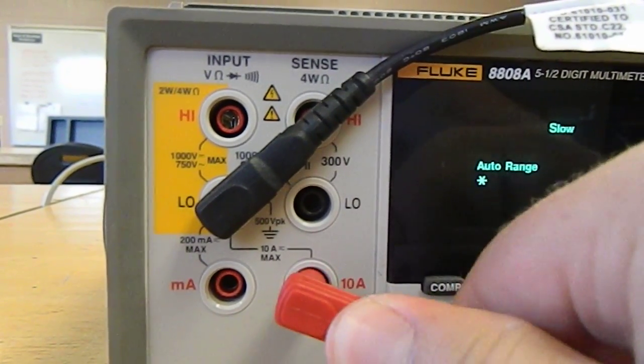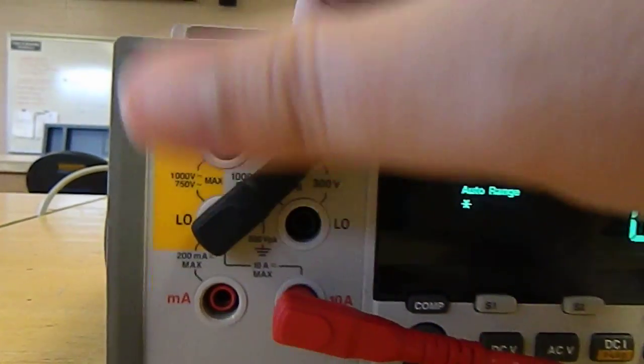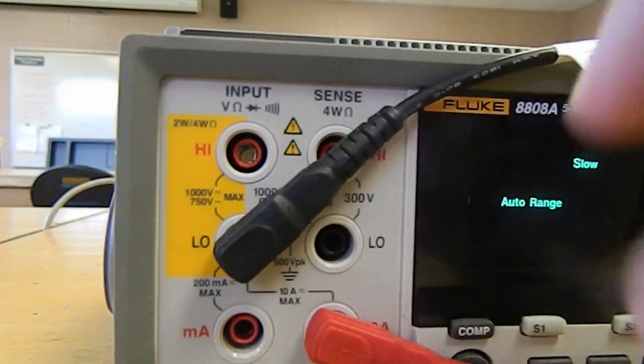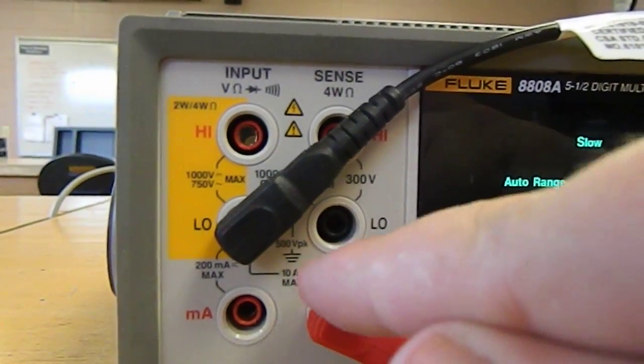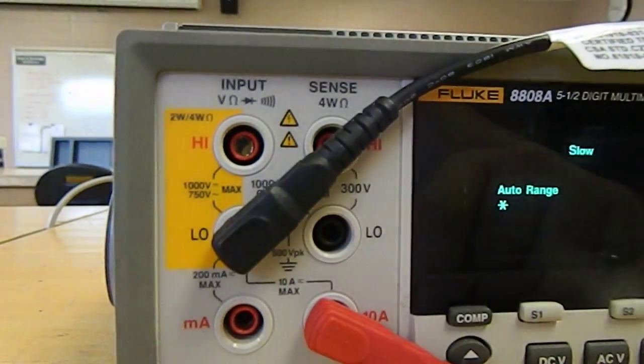And you can tell on this multimeter, in particular, that you need to connect from the 10 amp to here because this line defines a series connection.